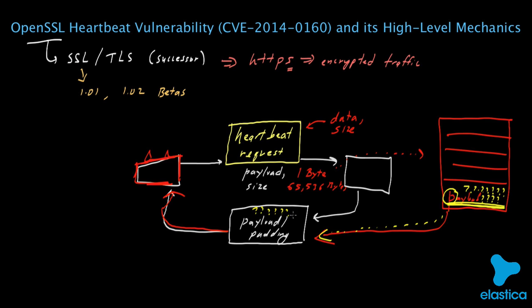Suddenly, the attacker sees an additional 65,535 bytes that were stored in the memory of OpenSSL — bytes he should not otherwise have been able to see. Keep in mind that OpenSSL is meant to provide security for sensitive data, which means it might have in its memory a lot of sensitive data it was processing. This could include things like confidential data, passwords, and even worse, the keys that SSL was using to encrypt and decrypt data. If an attacker has these keys, he can not only decipher any further traffic, but if he has a record of any past encrypted traffic he somehow recorded, he can try to read that as well.